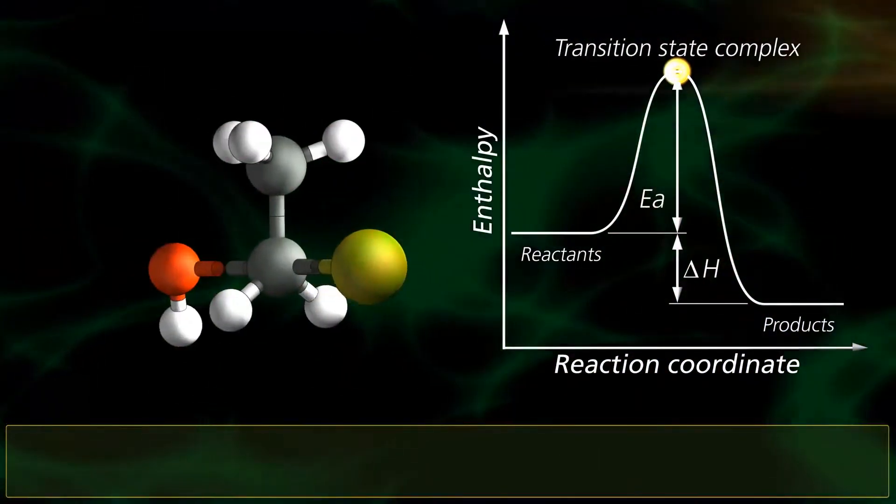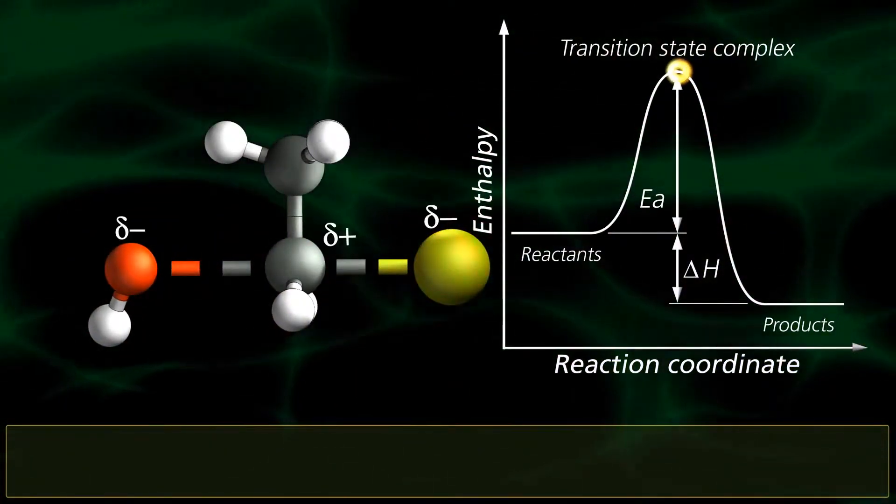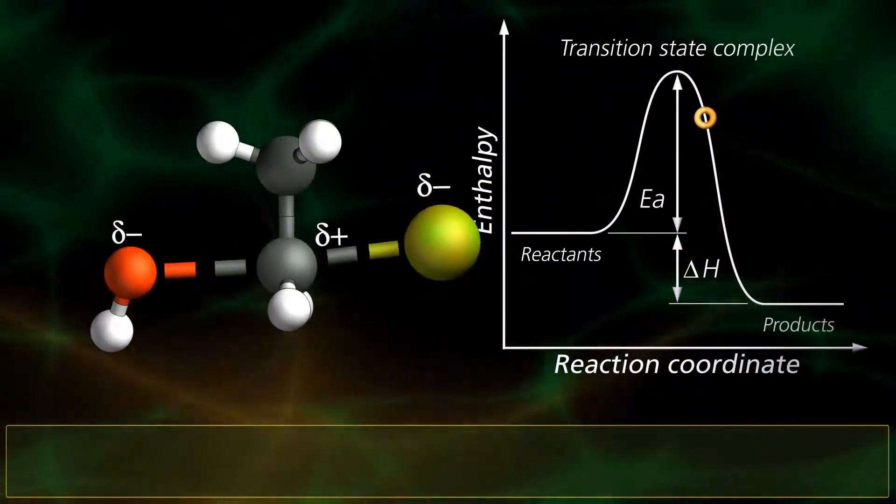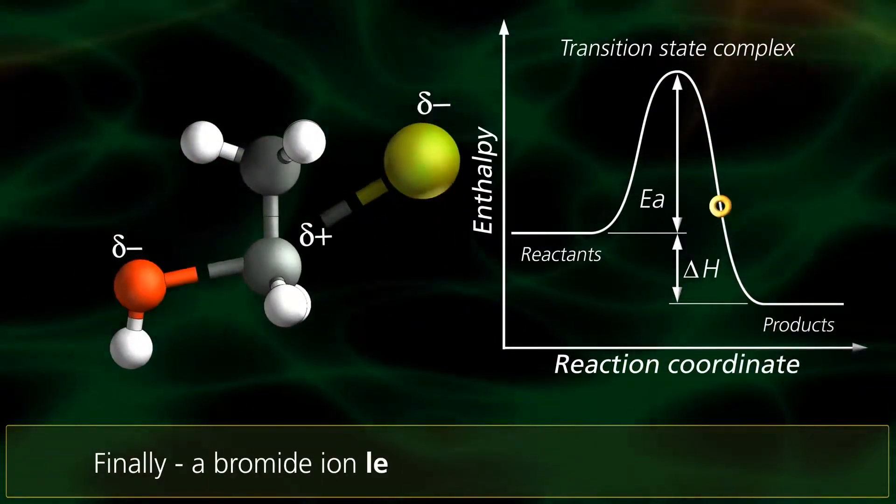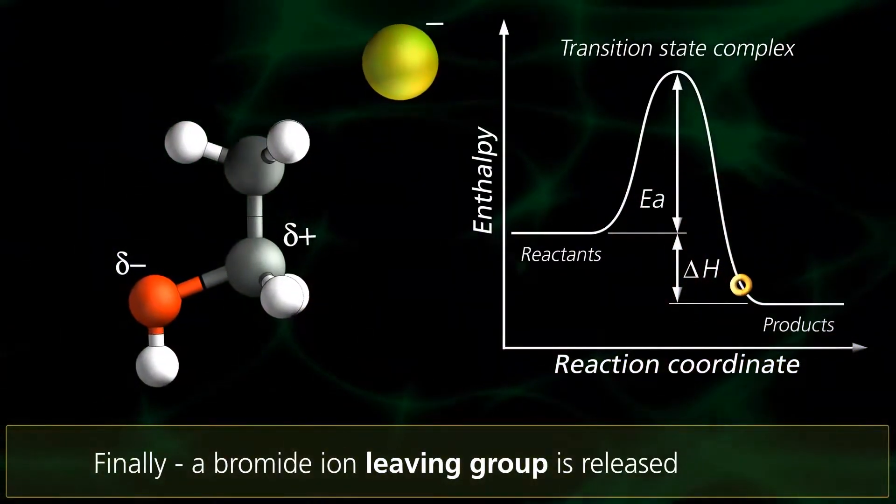The complex behaves like an umbrella blowing inside out as the bonds rearrange into a tetrahedral structure. A bromide ion called the leaving group is released.